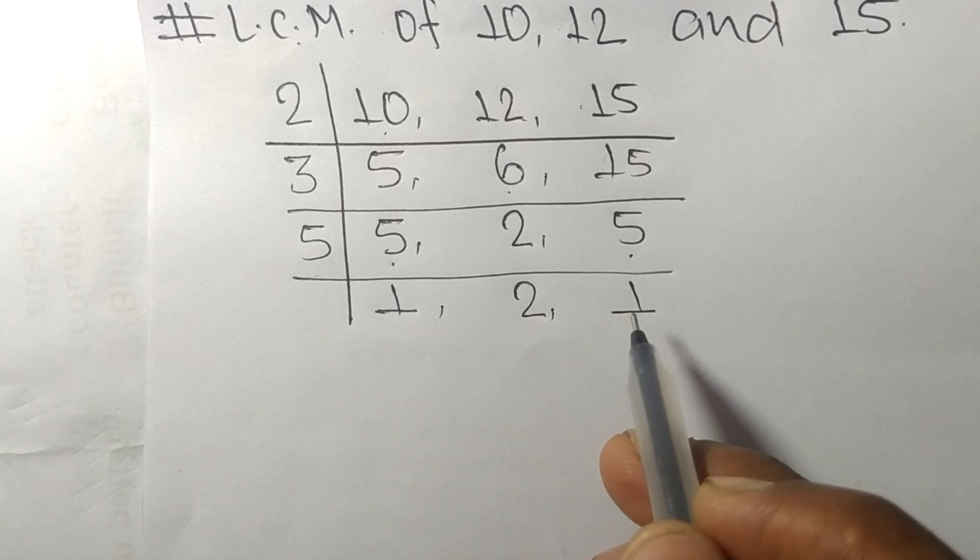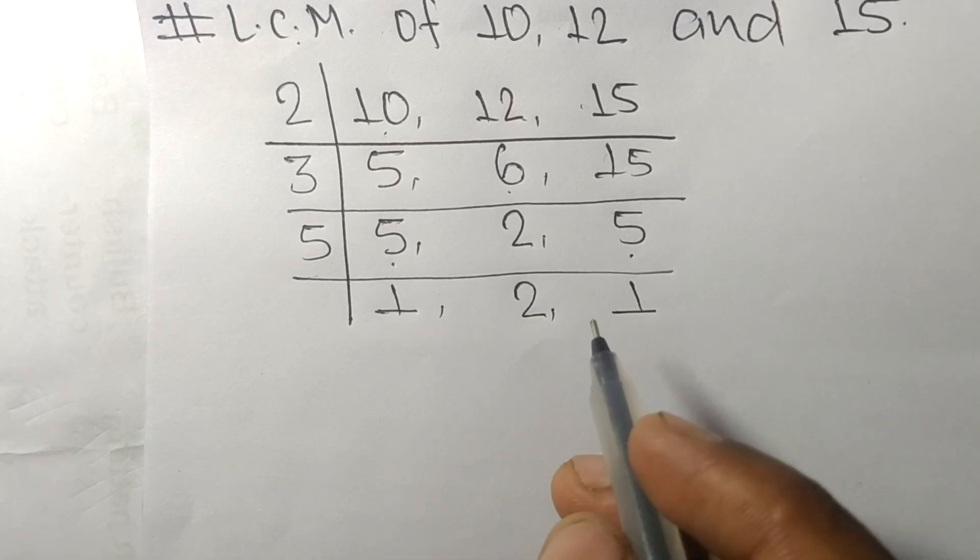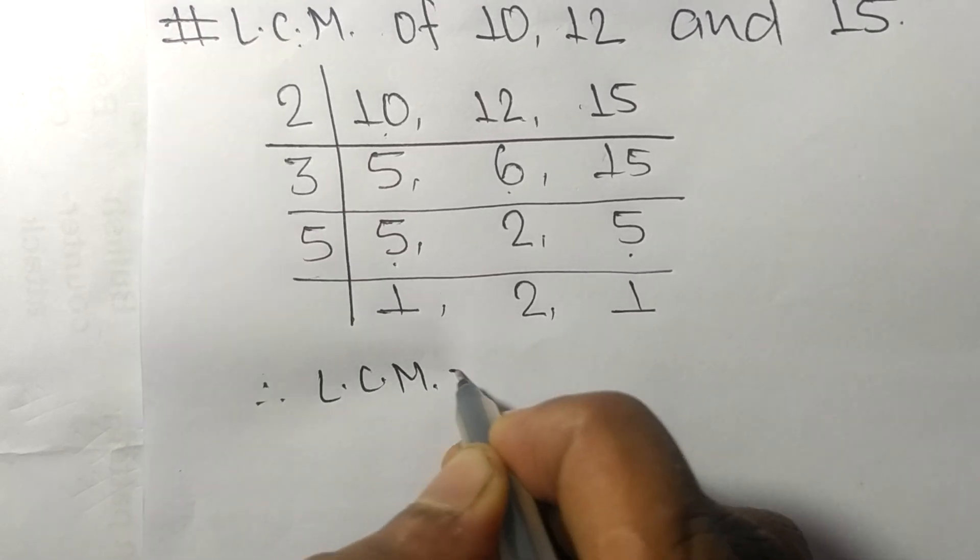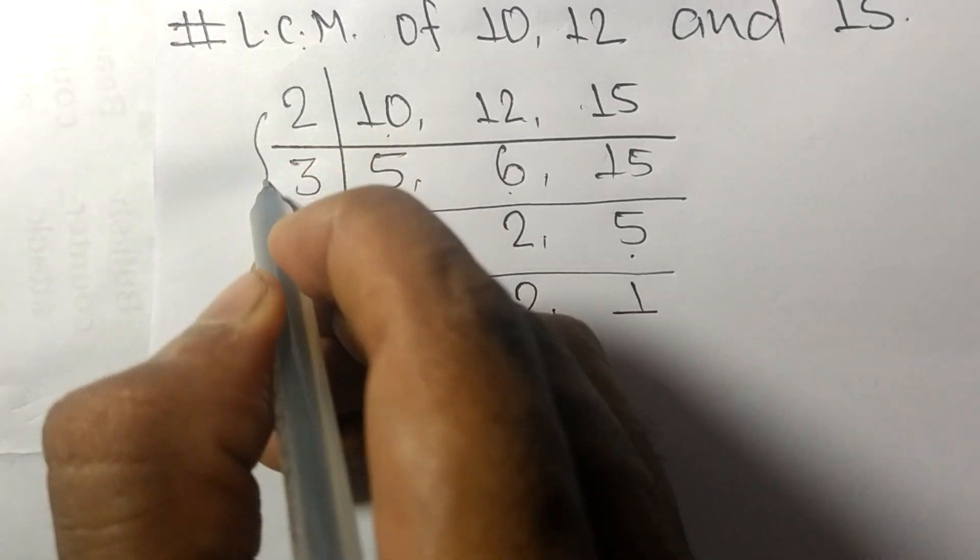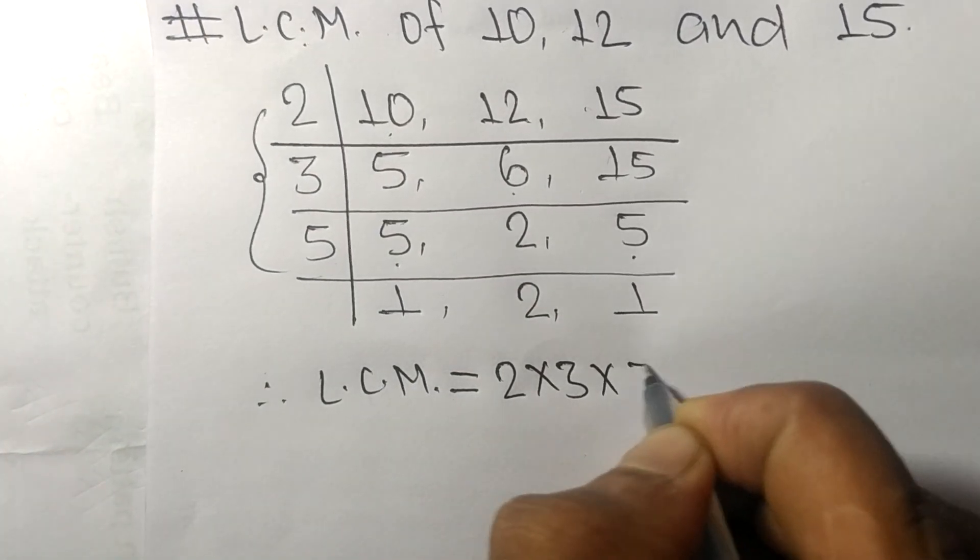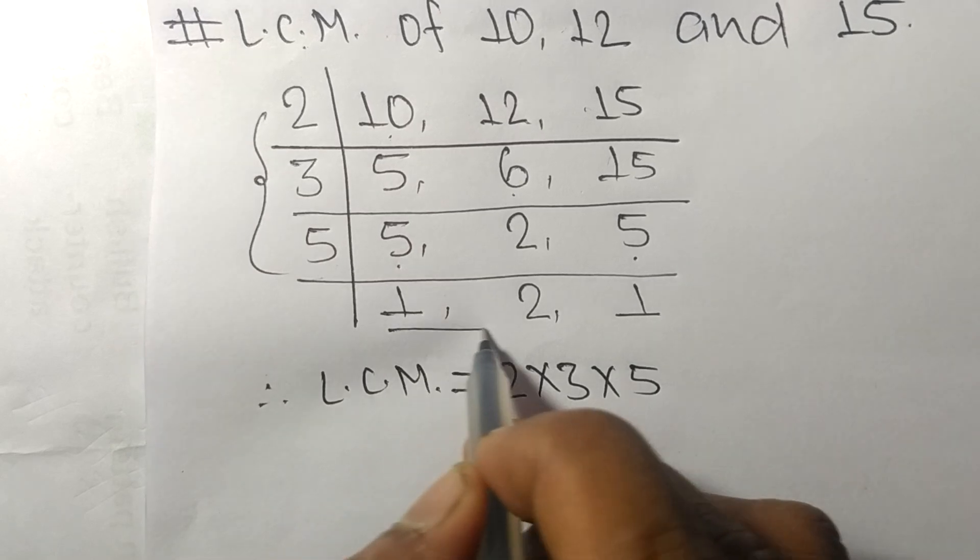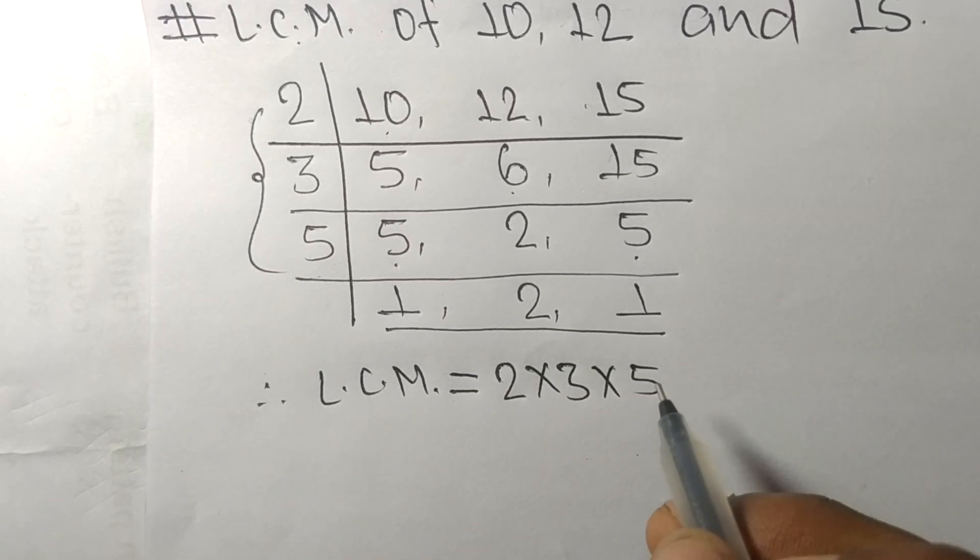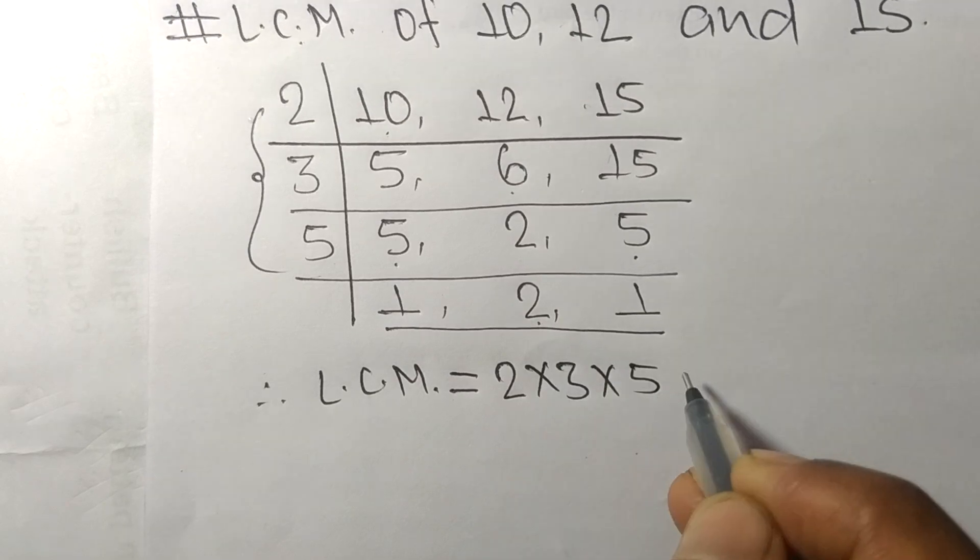These numbers are not exactly divisible by the same number. Therefore, the LCM equals the divisors from this side: 2, 3, and 5, and from this side we choose the numbers greater than 1, which is 2.